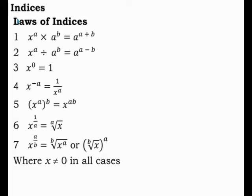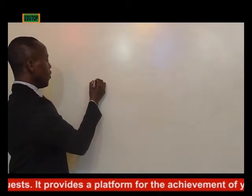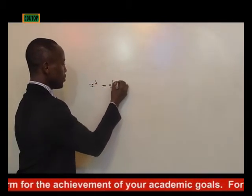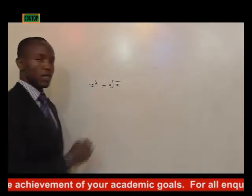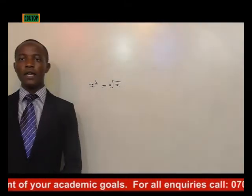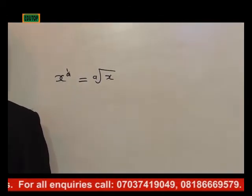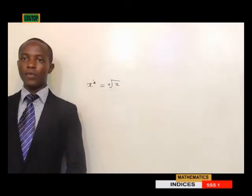The sixth law is x raised to the power 1 over A, which is the same as the A-th root of x — not square root, but A root of x. We have x raised to the power 1 over A, where A will be outside the root sign. Number seven: x raised to the power A over B, which is equal to the B-th root of x raised to the power A.